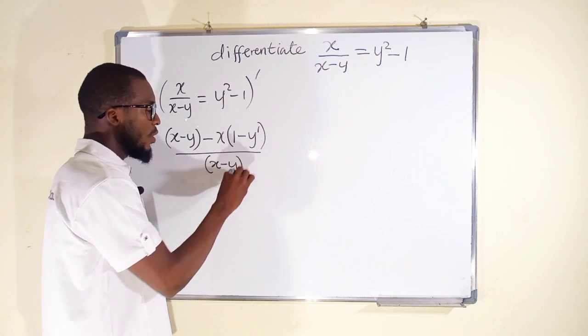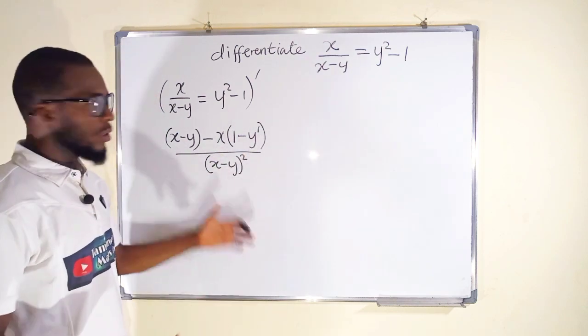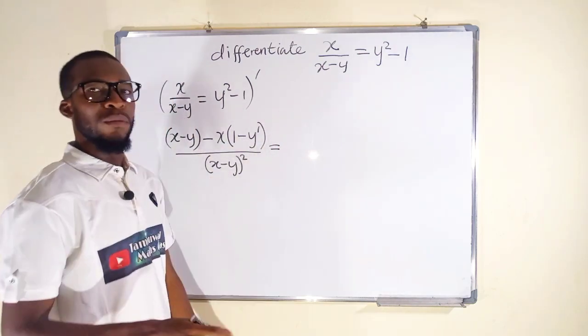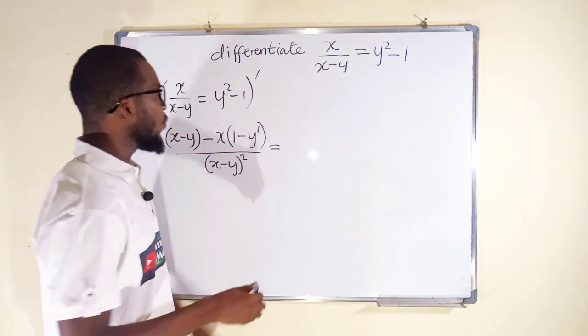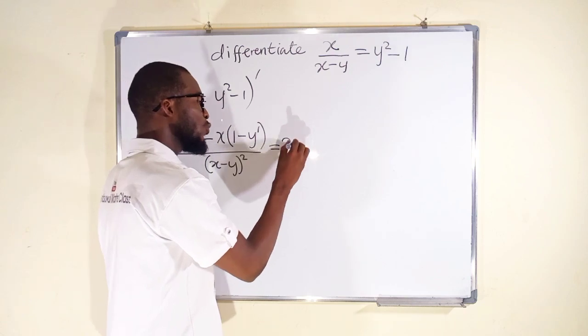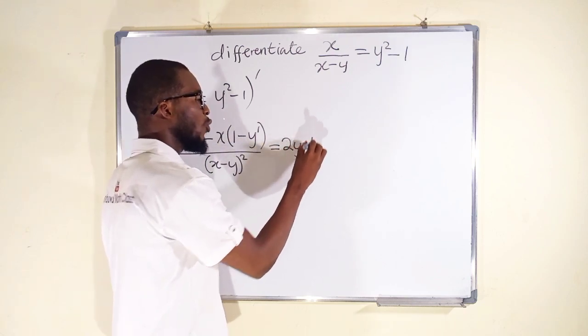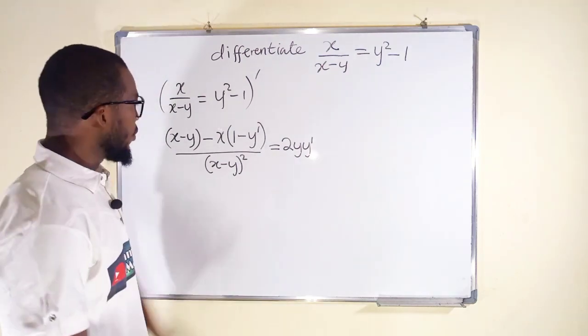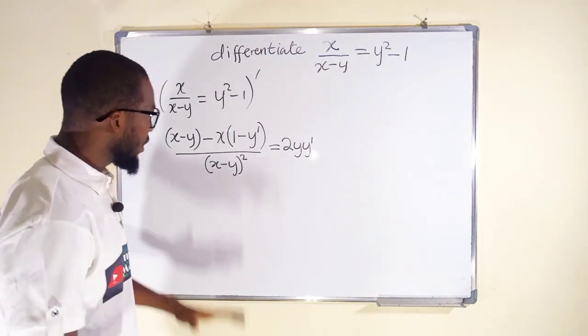We are done for the left hand side, then moving on to the right hand side. We have y squared minus 1. Differentiating y squared we are going to obtain 2y y prime or dy over dx. The derivative of constant is 0, so we are going to simplify and obtain our result.